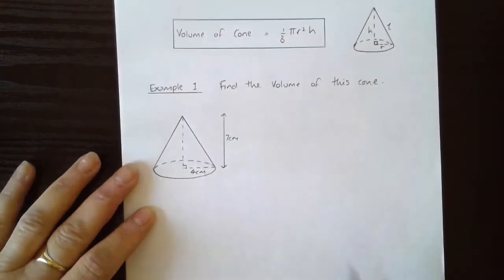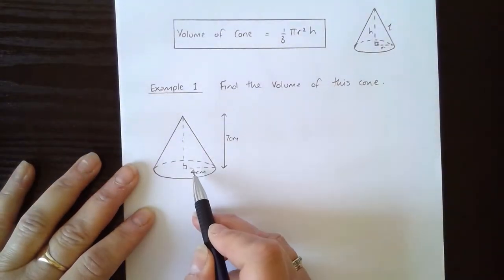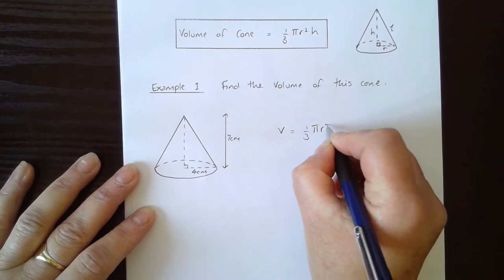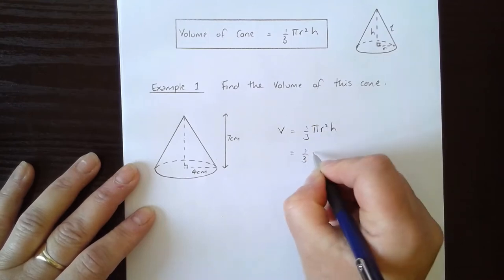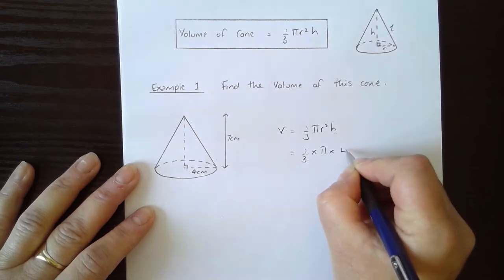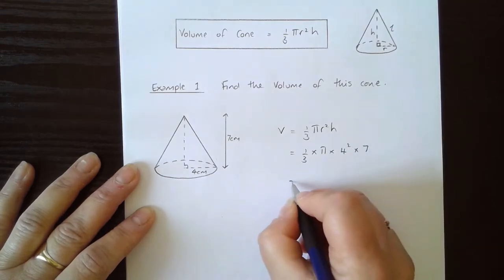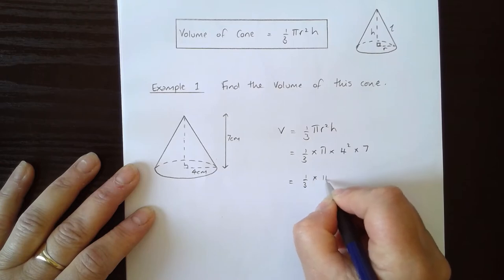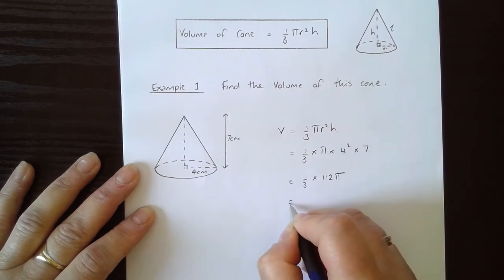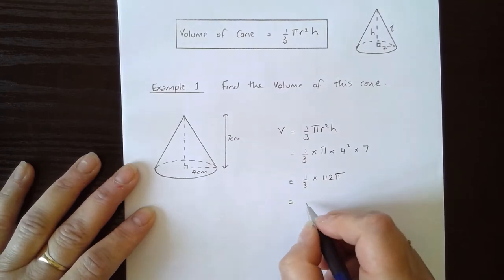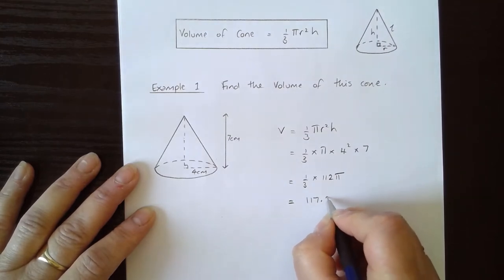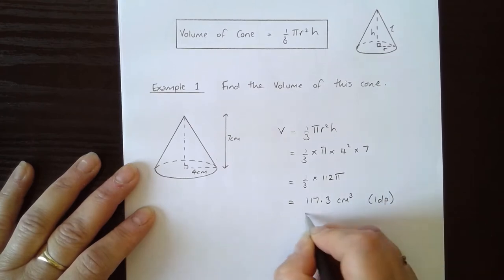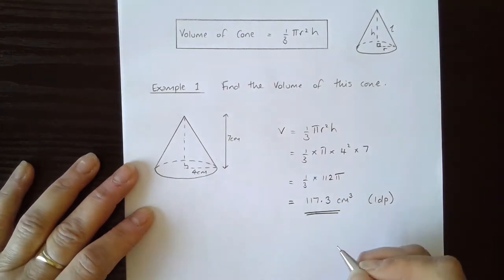It's very easy to use, so find the volume of this cone. V is equal to one third pi r squared h: one third times by pi times by four squared times by seven. 16 times by seven is 112, so it's one third times by 112 pi. Put that into your calculator and round it and you get 117.3 cubic centimeters to one decimal place. Nice and easy formula to use.